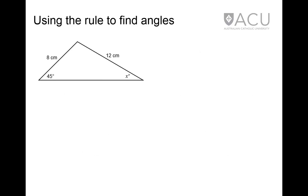To find an unknown angle, the top line of the ratio should contain the sine of that angle. For this triangle, the equation becomes sin x degrees over 8 equals sin 45 degrees over 12. This can be rearranged to leave sin x as the subject, and the right side of the equation evaluates to approximately 0.4714.